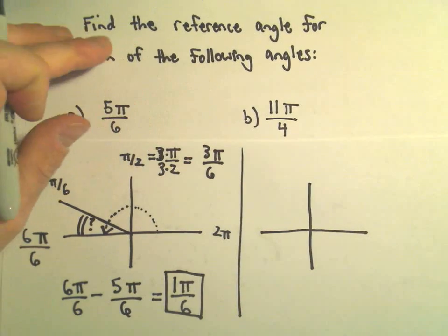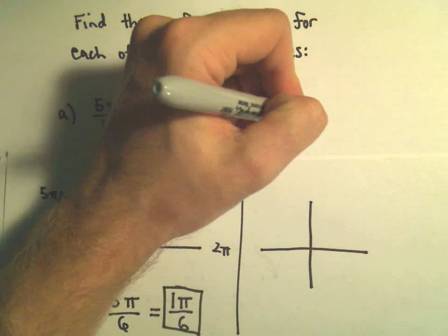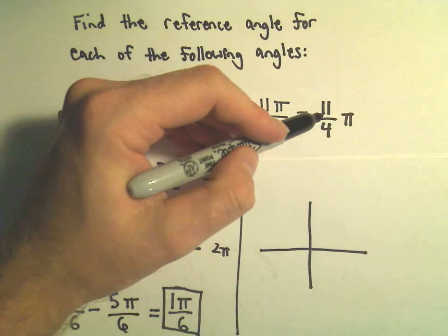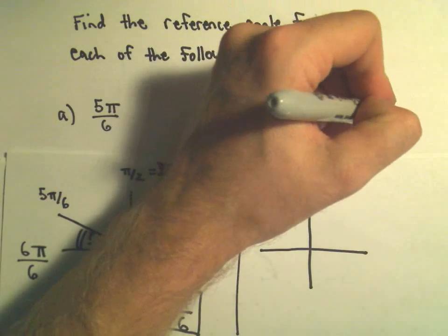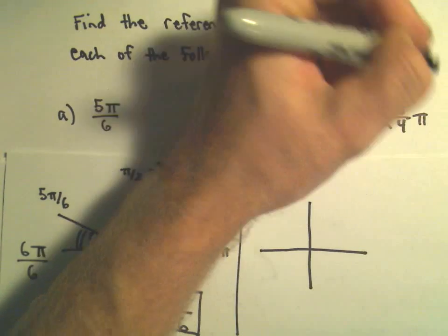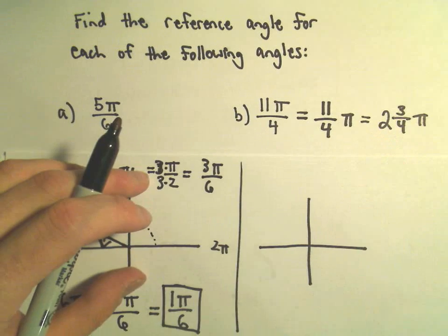Let's see, 11π over 4. What I like to do is make these into mixed numbers. So this is 11 over 4 π. 4 goes into 11, 2 times with 3 left over. So 11 over 4 as a mixed number, we can make that 2 and 3 fourths π.